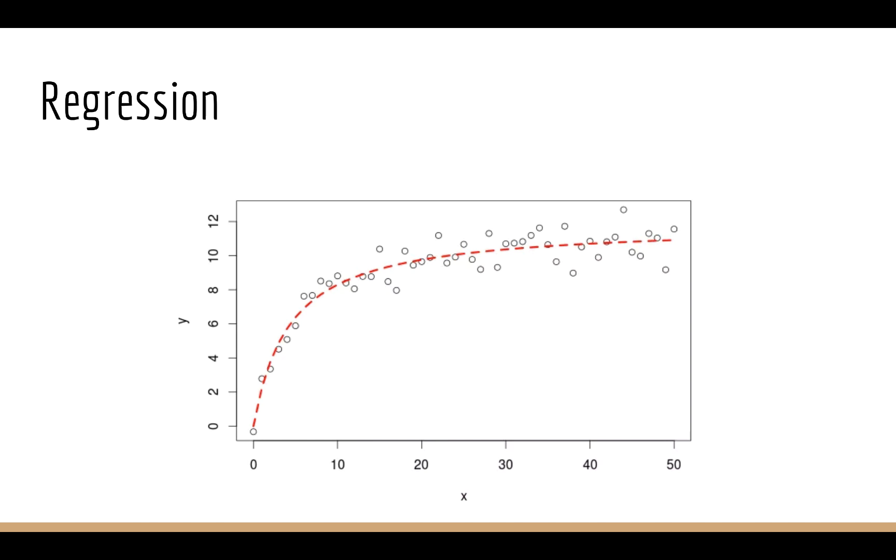Here is another example. This one is not a line, but remarkably, we can still probably imagine what kind of curve would go through these points. So that's all there is to regression. Here are some dots. Now tell me the line or the curve that goes through these dots.